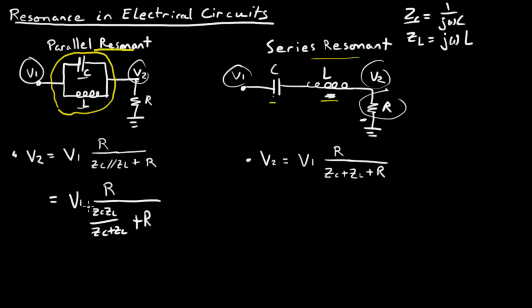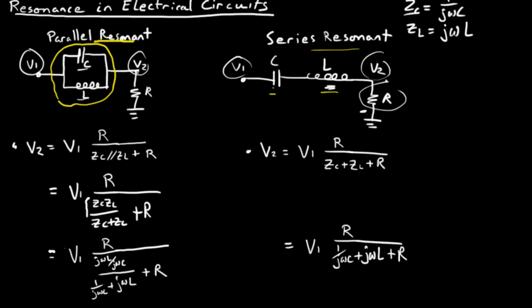Here I've just written out the expression for ZC in parallel with ZL. Now I've introduced the j omega C and the j omega L terms. You can pause and convince yourself this is correct.